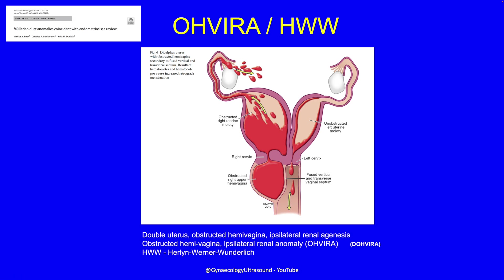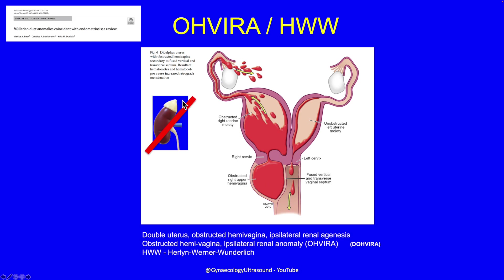Another abnormality that's more common than you think is OHVIRA, or the Herlyn-Werner-Wunderlich syndrome — where you have a uterus didelphys with an obstructed hemivagina. One of the moieties is obstructed: one will menstruate, the other will not. There is no kidney on the affected side. This is a very important abnormality because these patients will get endometriosis sooner or later. There's a very good review article about all of that.